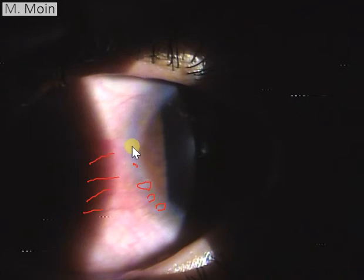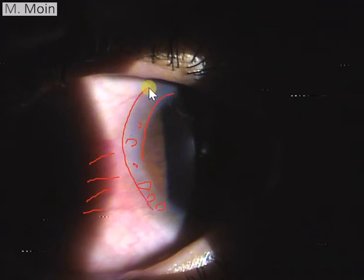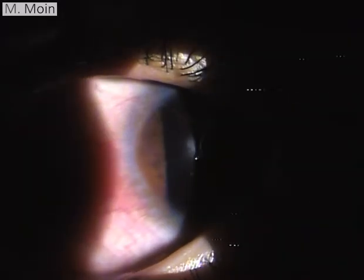Here you can see this whitish area on the limbus which looks more like arcus senilis, but when you see it in younger patients with vernal keratoconjunctivitis, it is called pseudo-gerontoxon. Gerontoxon is basically that circular whitish opacity which you see in patients with arcus senilis.